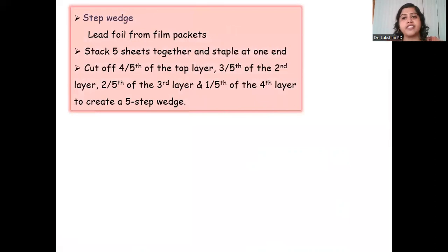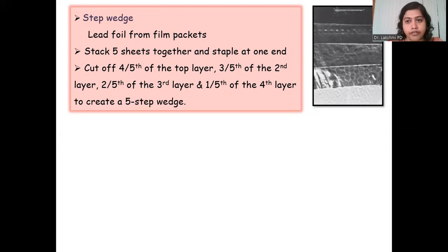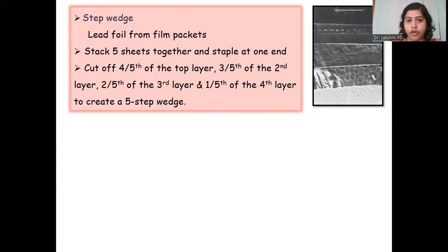A much more cost-effective method is the step wedge technique, in which you use nothing but discarded lead foils from used film packets. You need five lead foils and staple them together. Then you cut off layer by layer: cut off four-fifths of the topmost layer, three-fifths of the second layer, two-fifths of the third layer, one-fifth of the fourth layer, and you will get a five-step wedge.